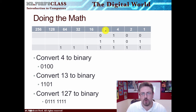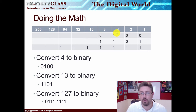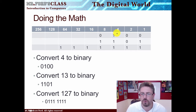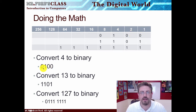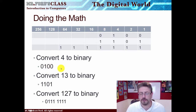Can 8 go into 4? No — so there's a 0. Can 4 go into 4? 4 minus 4 is 0 — yes, so we put a 1 here. Now 2 can't go into 0, so there's a 0. And 1 can't go into 0, so there's a 0. So if we want to write 4 in binary, it's 0, 1, 0, 0.